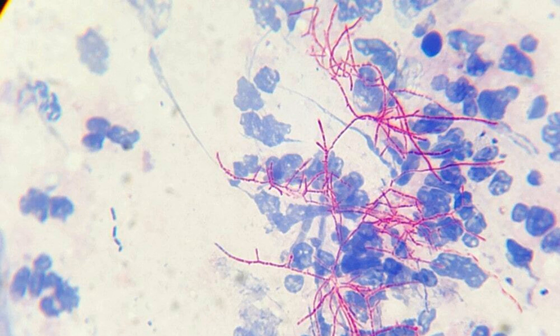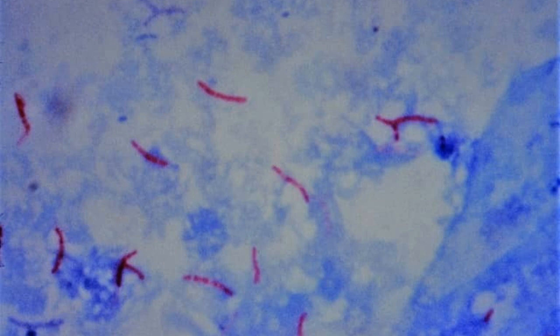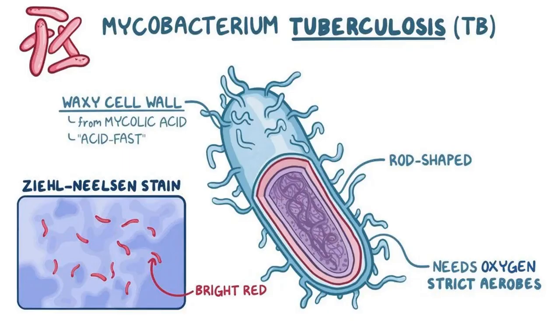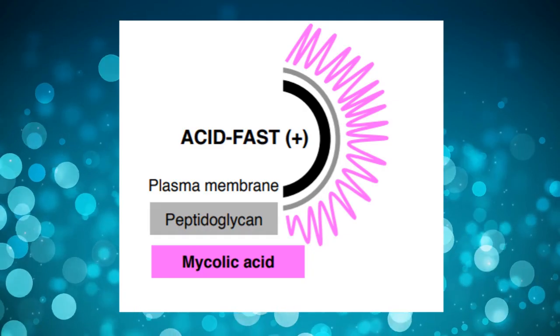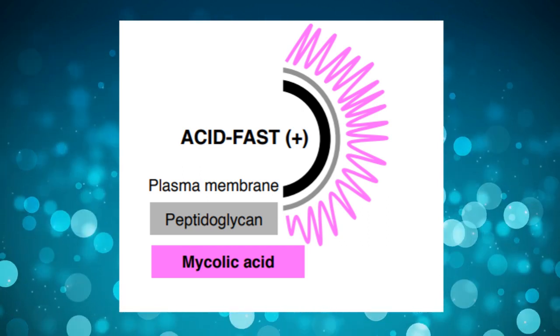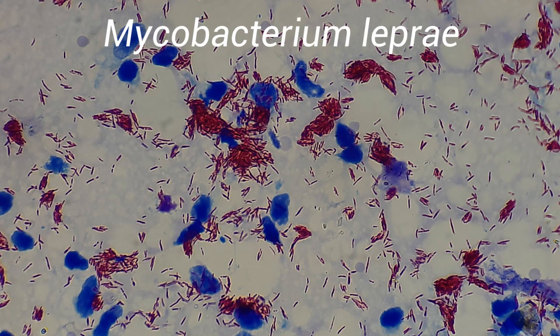The acid-fast stain is another important diagnostic stain that differentiates pink-colored acid-fast bacteria from non-acid-fast bacteria, which appear blue. This stain originated as a specific method to detect Mycobacterium tuberculosis — bacteria having an impermeable outer wall that holds fast to the carbol-fuchsin dye even when washed with acid, which is why it is called the acid-fast stain. Other acid-fast bacteria include Mycobacterium leprae and Nocardia species.